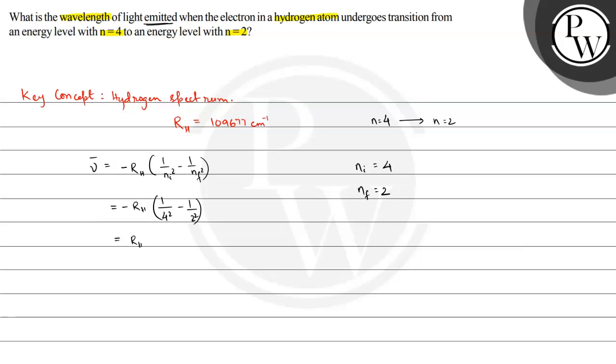This becomes Rh multiplied by 1 by 2 squared minus 1 by 4 squared, or Rh multiplied by 1 by 4 minus 1 by 16. This equals Rh multiplied by 3 by 16. This value is 0.1875.